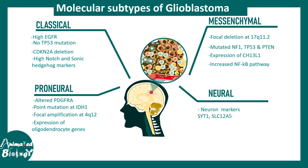In the neural subtype, neuronal markers such as synaptotagmin and SLC12A5 are expressed in the tissue. All of these tumors are basically glioblastoma, but with certain differences. Knowing these differences is really important, because once the molecular mechanisms are clear, targeted therapy can be achieved — otherwise, a similar treatment approach can only provide limited benefit to the patient.